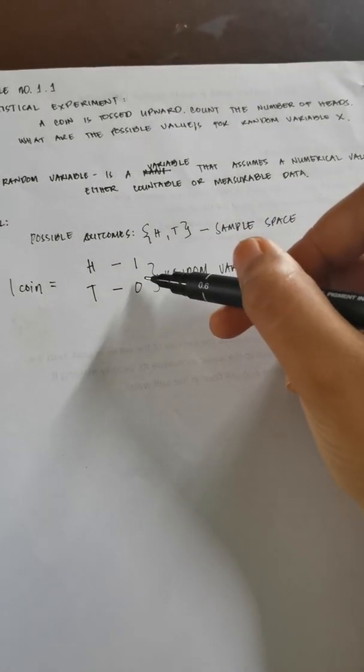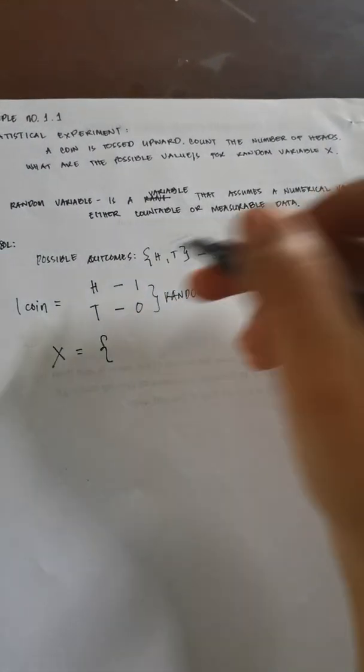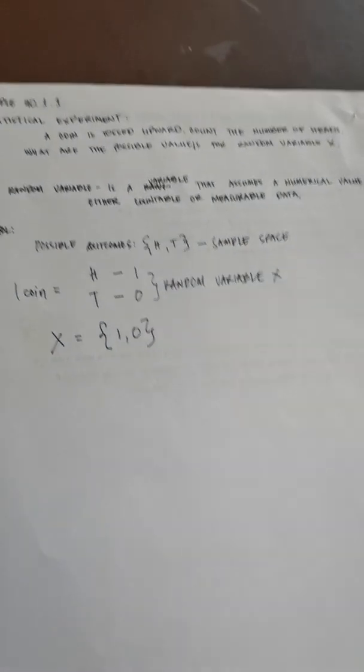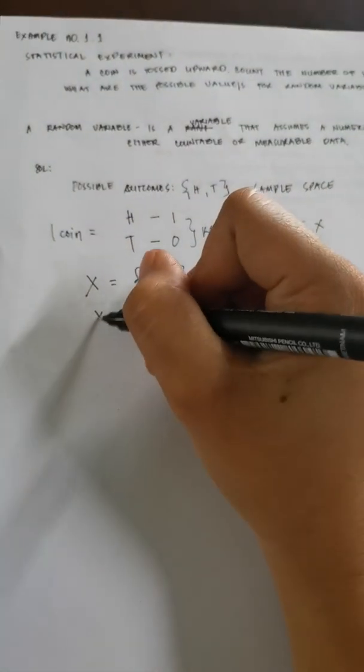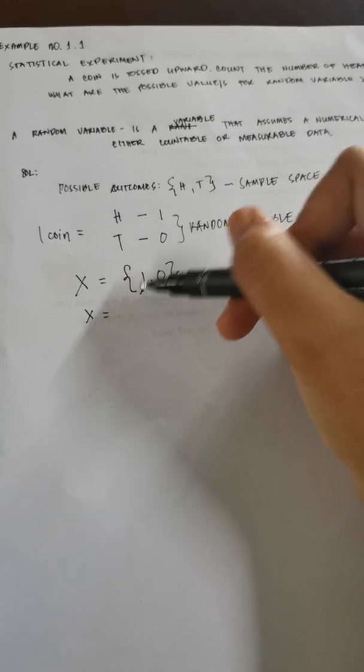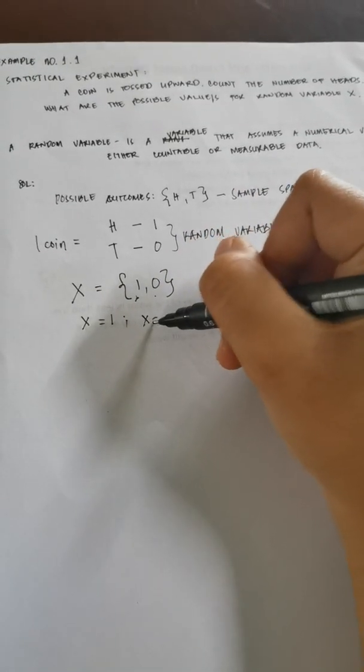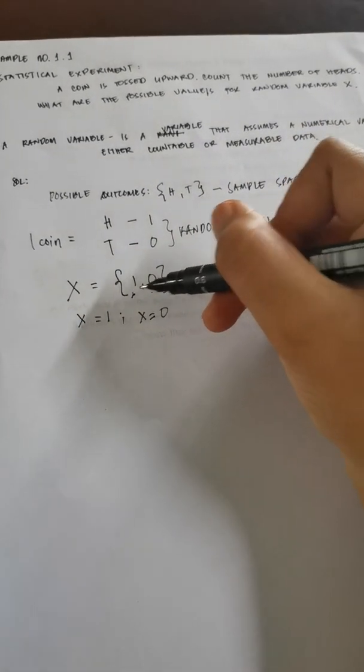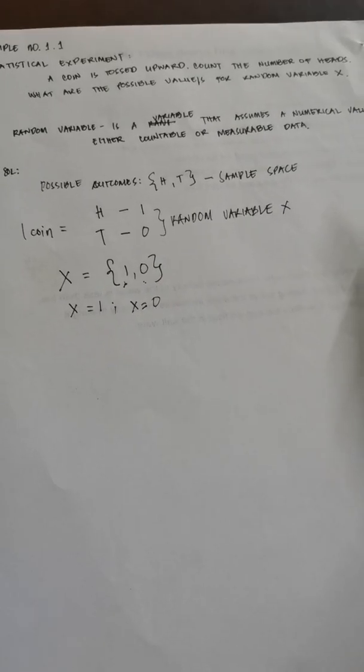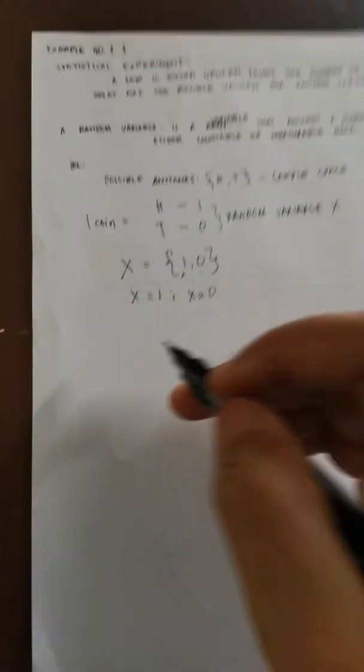So now, your random variable is only 1 and 0. And we are going to write that as X is equal to {1, 0}, or {0, 1}. But remember always, maybe you're going to get confused why there is a small letter x. Small letter x represents every member of your random variable X. So small letter x could either be 1, or small letter x could either be 0. Every member of your set of random variable X, capital letter X. Now, this is example number 1.1.